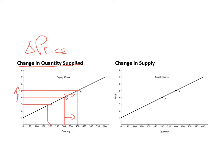Now compare that with a change in supply. Suppose there was a technological innovation that results in increased productivity, reducing the firm's costs and allowing the firm to produce more. The result would be a change in supply — in particular, an increase in supply. To represent this, at every price, quantity supplied would be higher, and that would be represented by a shift in the supply curve.